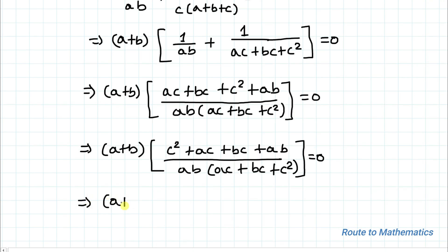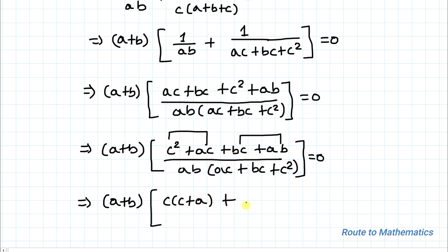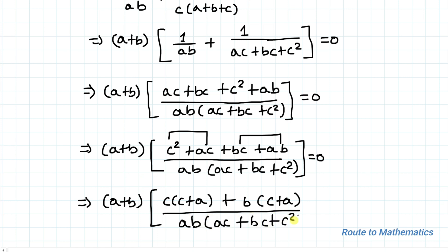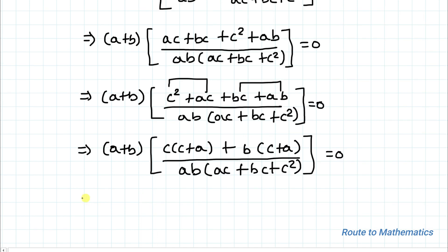This implies (a+b) multiplied by the expression where we take c common from the first two terms giving c(a+b), and b common from the remaining terms. So we can write (a+b) multiplied by (c+a)(b+c) / (ab·c(a+b+c)) = 0.